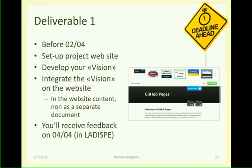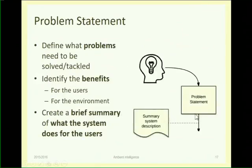At the beginning of April, on the 2nd of April, the information needed on the website is the vision. In the next lab we will read all your websites and then, working in the lab, go group by group and say what is missing, what is good, and what is bad for deliverable one. And this concludes the first step — the problem statement, describing the system in a summary way.